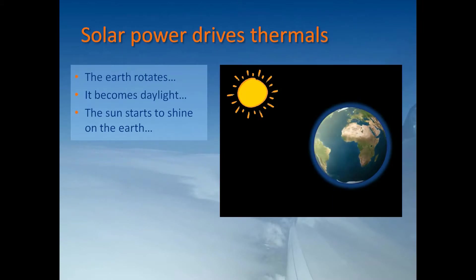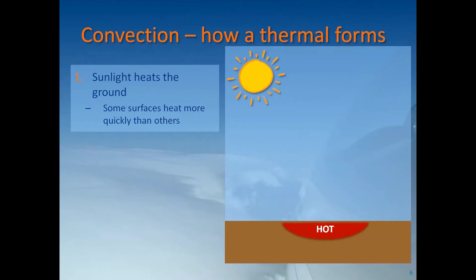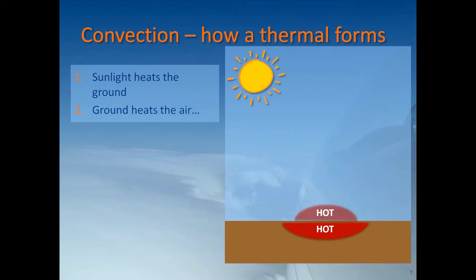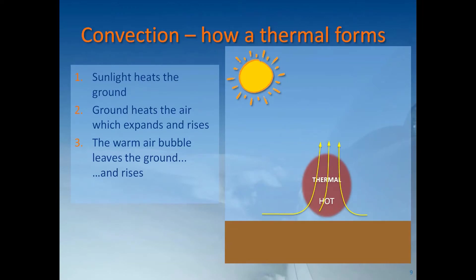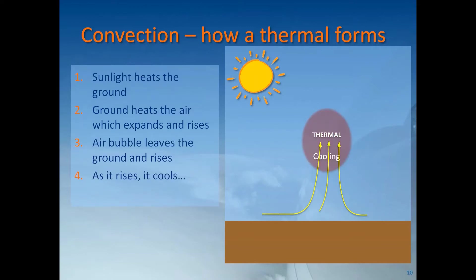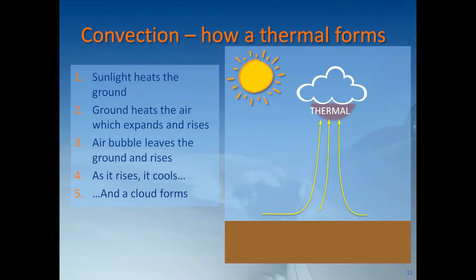Let's think about how that happens. As the earth rotates, imagine it's dark, then it gradually becomes light — the sun shines on the earth and starts to heat the ground. Some surfaces heat more quickly than others. You know that if you've been playing barefoot on the grass on a hot day and you walk onto the patio, it's really hot underfoot, so you jump back onto the grass. When they heat up, they heat the air next to them a little more than the air around it. The ground heats the air up — it expands, becomes less dense, so it rises. Eventually the bubble leaves the ground and goes up, but as it rises, it cools.